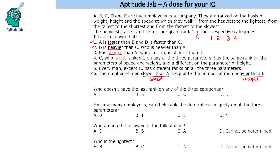A is faster than B, so A's rank in speed can be one, two, three, or four — but not five. B is heavier than C, and C is heavier than A, so B's rank in weight can be one, two, or three — not four or five. The number of men slower than A equals the number of men heavier than B. If A is fourth in speed, then B would be second in weight. If B were first, A cannot be slowest, so that doesn't work.